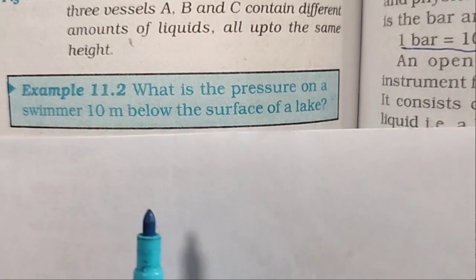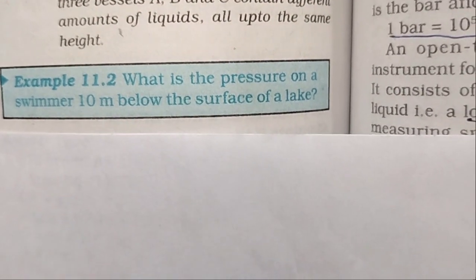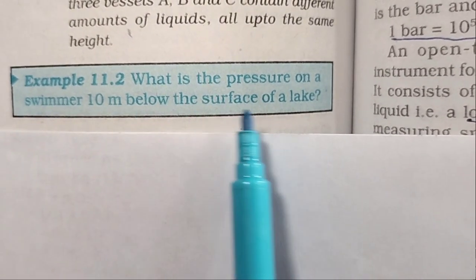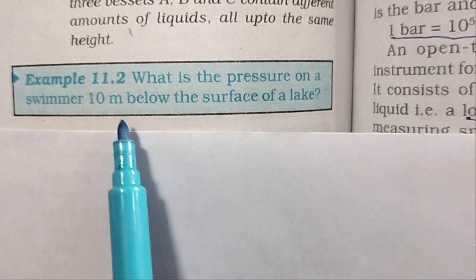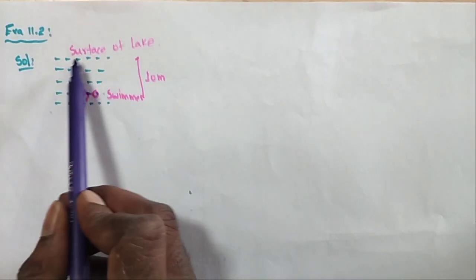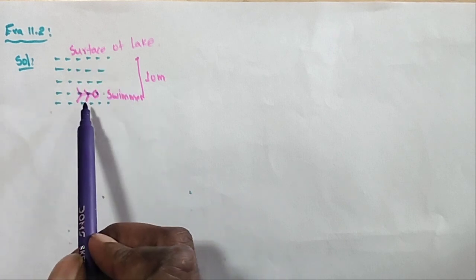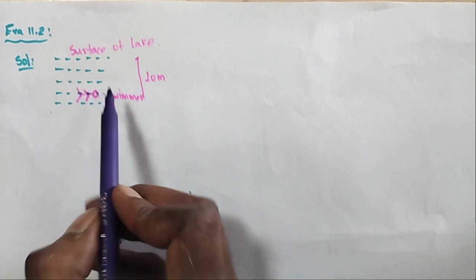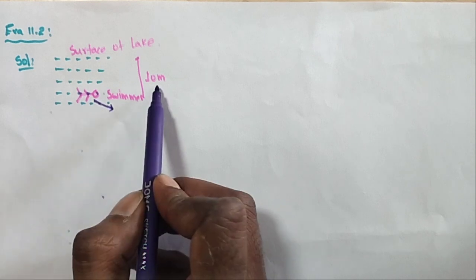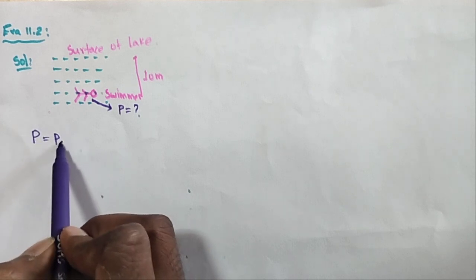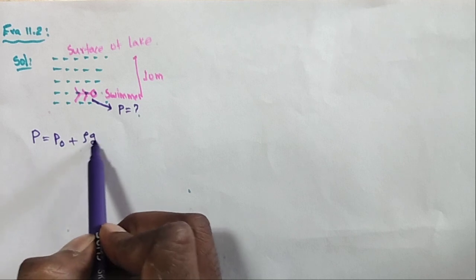Now I will explain some exercise problems from the Telangana Academy textbook. Example 11.2: What is the pressure on a swimmer 10 meters below the surface of a lake? Here is the solution. We have one lake surface with a swimmer at 10 meters depth. How much pressure is acting at this depth?